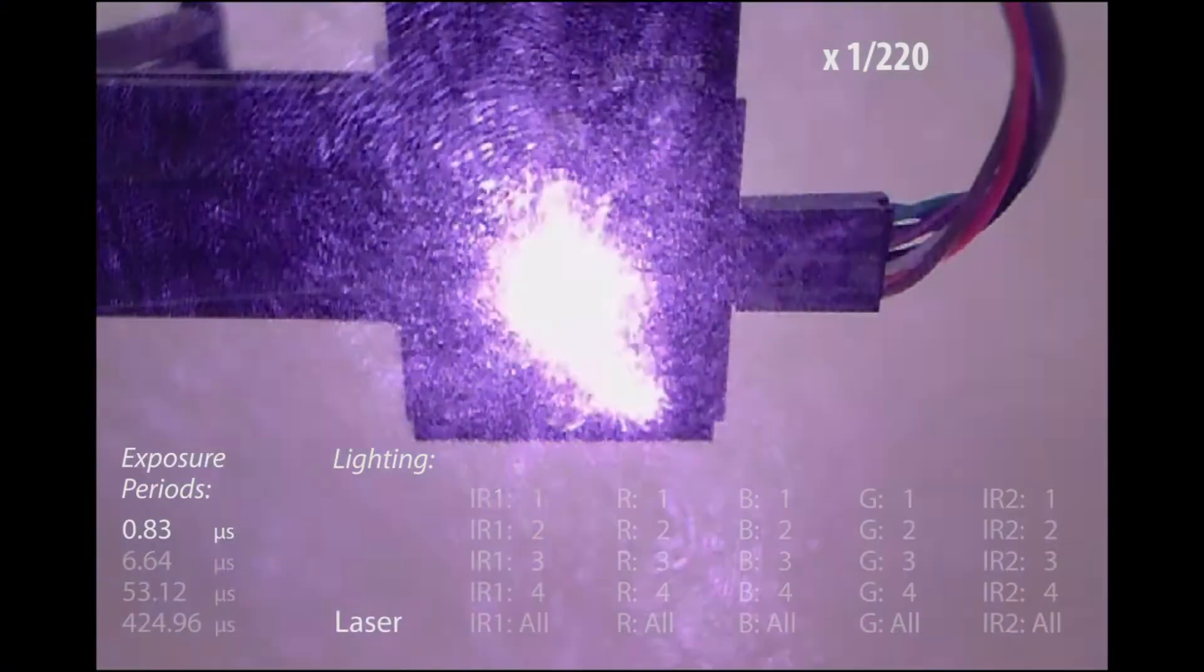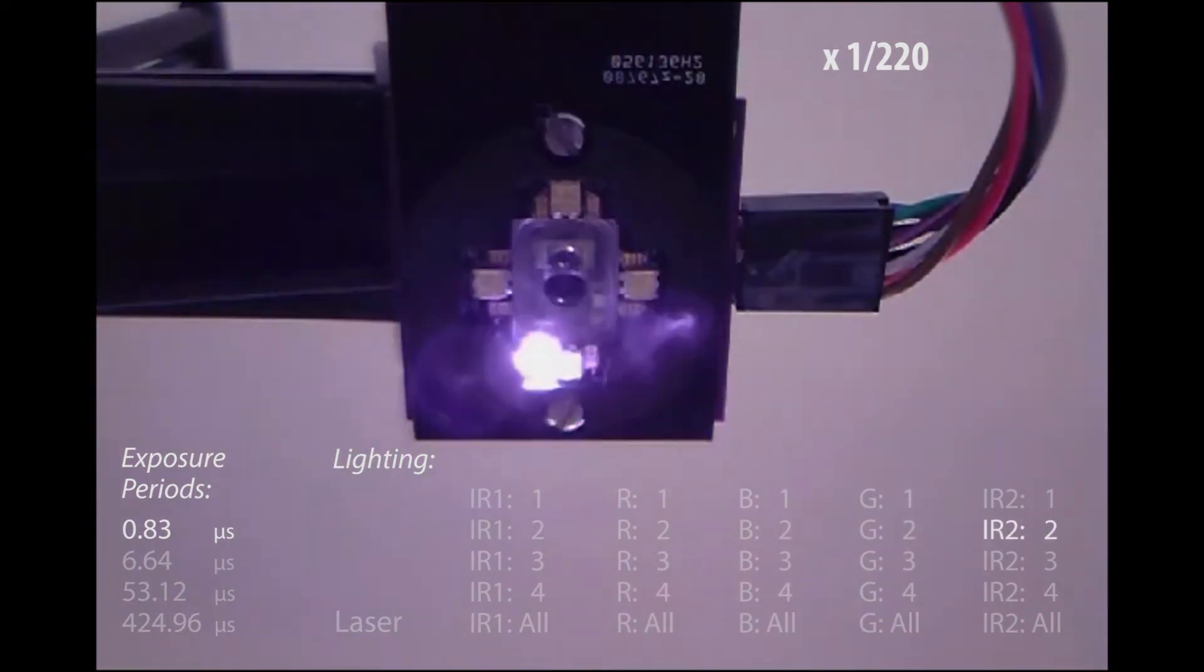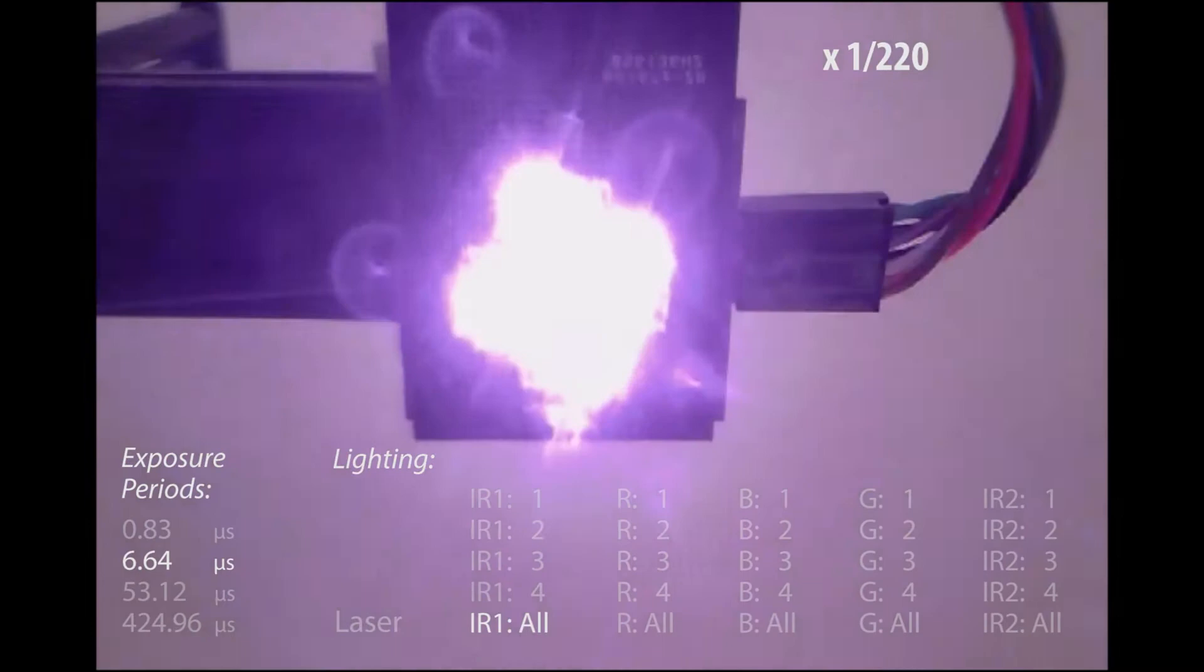SPECTRANS has 26 different lighting conditions with LEDs in 5 different wavelengths and 4 locations, which enables classification of highly specular or even transparent surfaces.